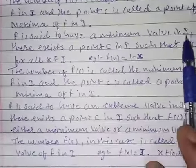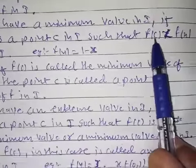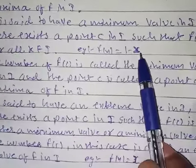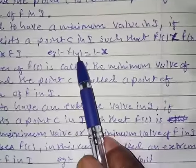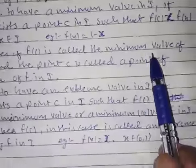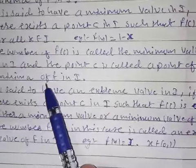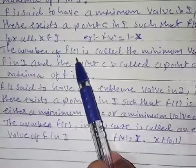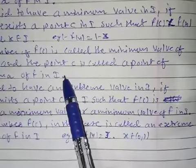Similarly, f is said to have a minimum value in I if there exists a point c in I such that f(c) is less than f(x) for all x belonging to I. For example, f(x) = 1 - x: substituting 1 gives 0, substituting 2 gives -1. So f(c) is less than f(x). The number f(c) is called the minimum value of f in I, and the point c is called the point of minima of f in I.